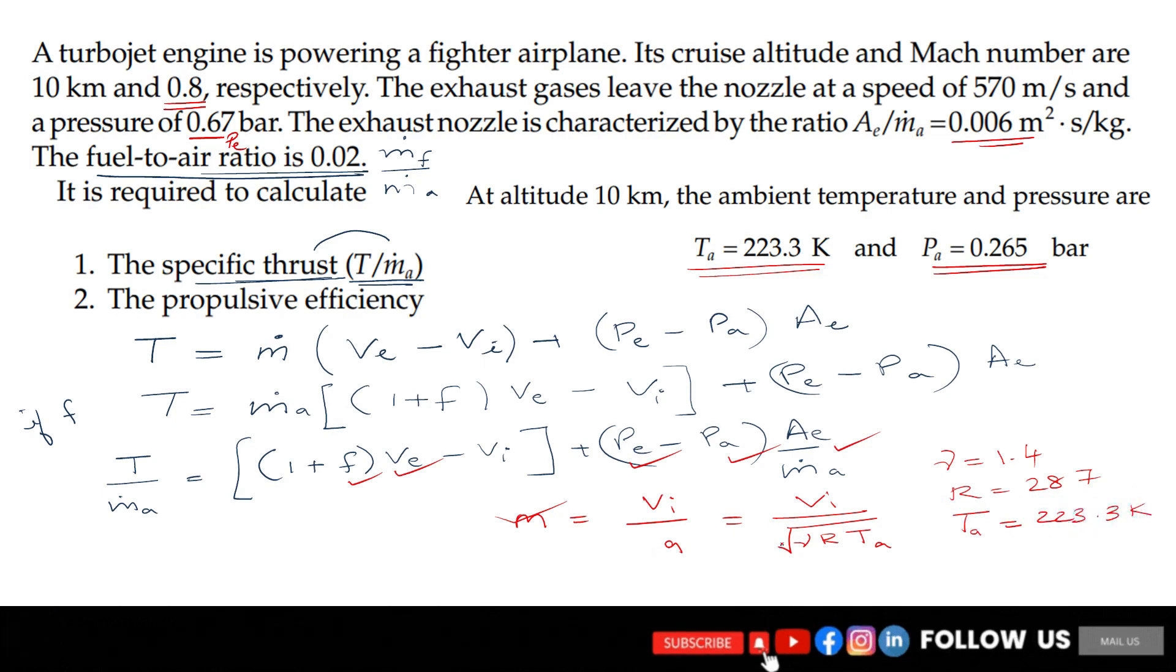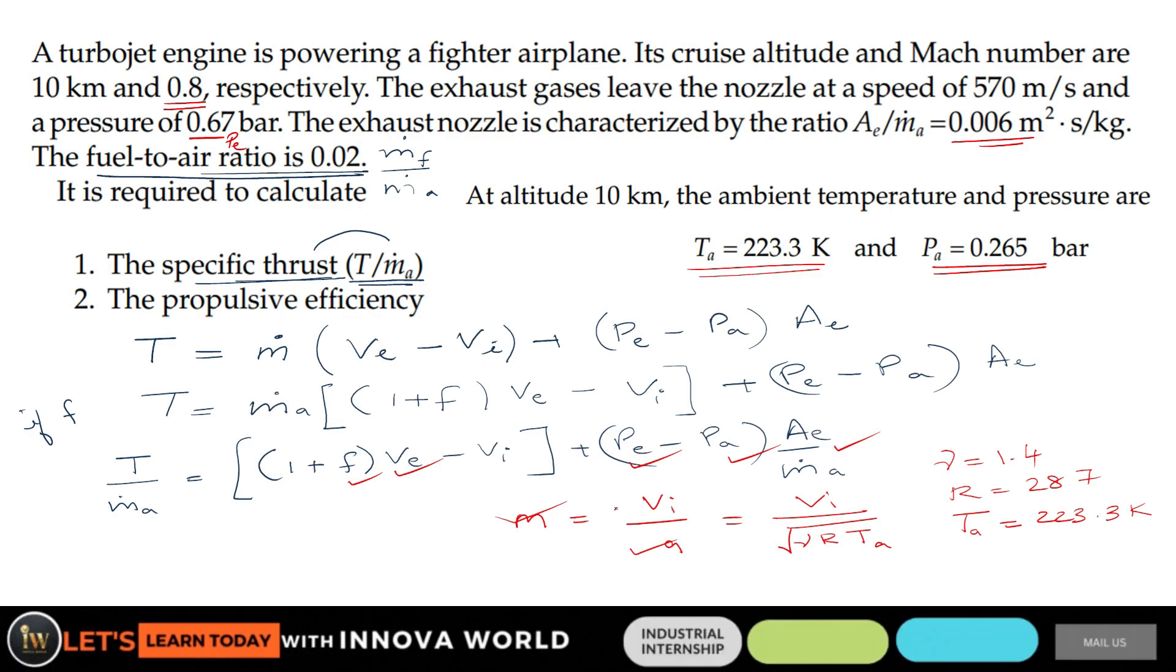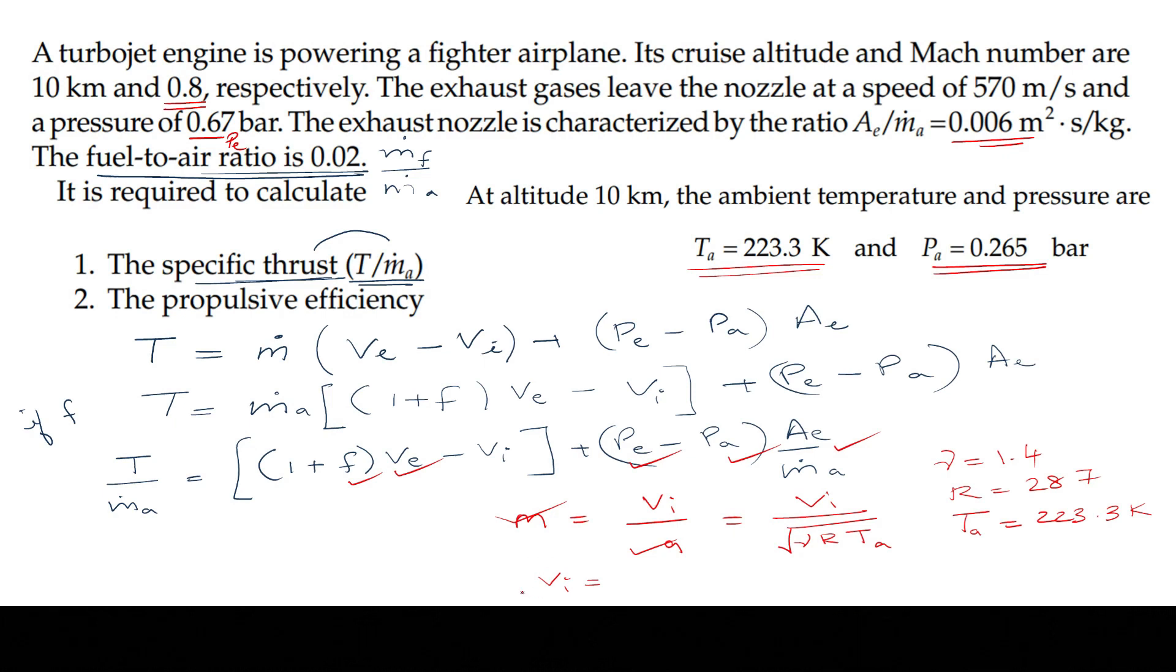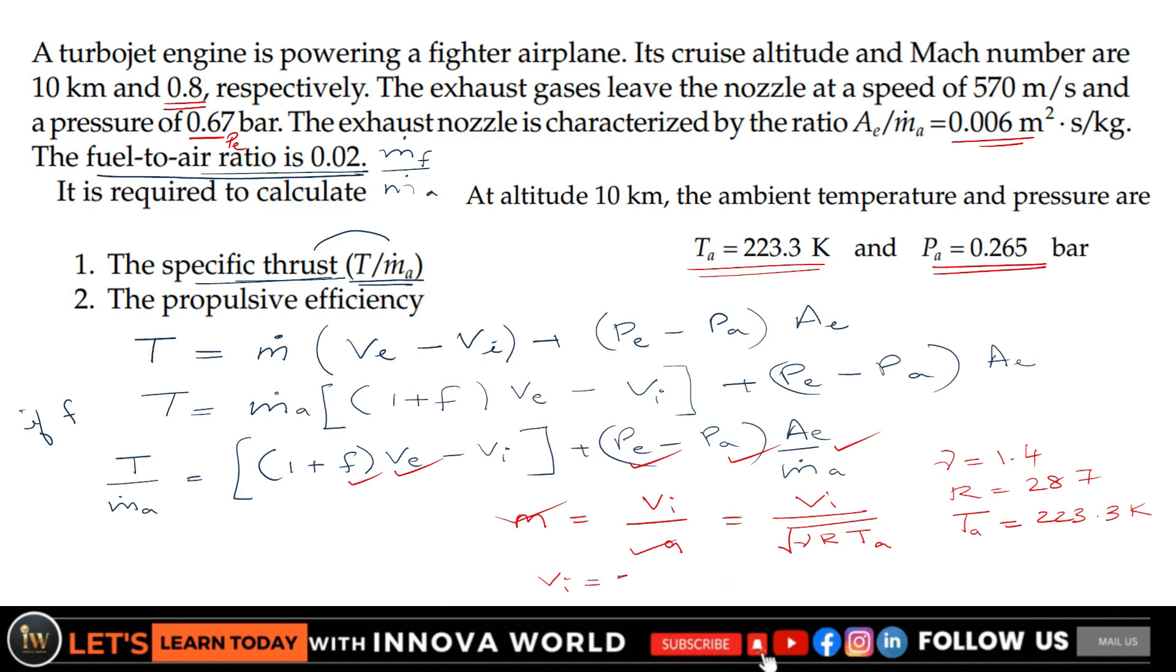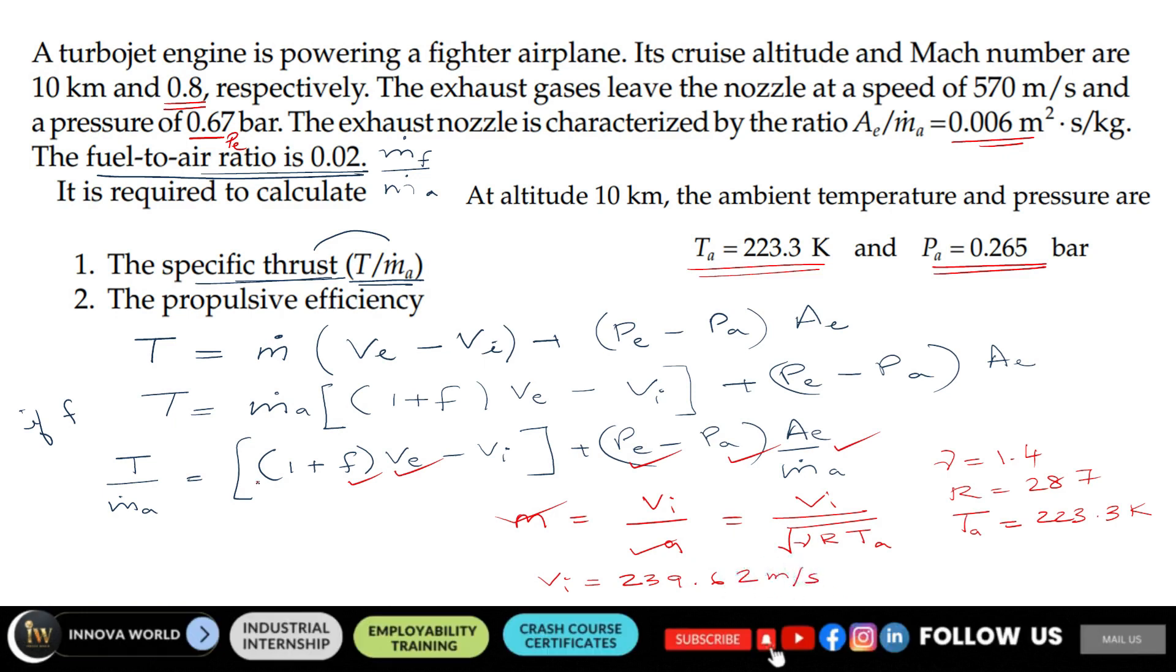So you will know what is a, you know what is M, so you can find Vi. Find out and tell me what is Vi. It's 239.62 m/s.